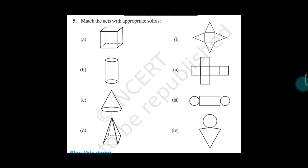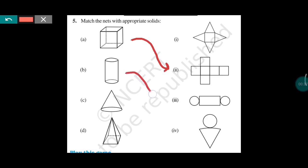Now this is question number 5 of 15.1: Match the net with appropriate solids. Solids are given and we have to match them with the given nets. Net of a figure means when you fold this net, this figure will be formed. This is a cube and it will be matched by the second net. This is a cylinder, which will be matched to the third net. This is a cone, and the fourth net is the net of the cone. Then D will be matched with the first net.